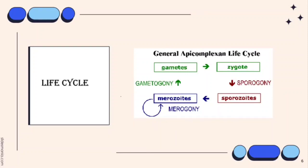Sometimes these multiple rounds of merogony will involve a switch in the host organism or a switch in the type of cell invaded by the parasite, resulting in distinct stages of merogony. As an alternative to asexual replication, merozoites can develop into gametes through a process variously called gametogony, gamogony, or gametogenesis. As in other types of sexual reproduction, the gametes fuse to form a zygote which will undergo sporogony.